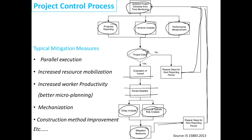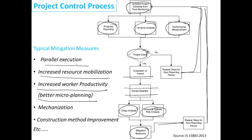Typical mitigation measures — as we discussed in the crashing modules — include executing activities in parallel and increasing resources, so that the production level increases, which is very common to use. Ideally, we should increase worker productivity through better planning or better micro planning. This would be the ideal way, getting more value out of the work done in the given time. We can also do mechanization and methods improvement. There are several mitigation measures to try to catch up with any lost time.